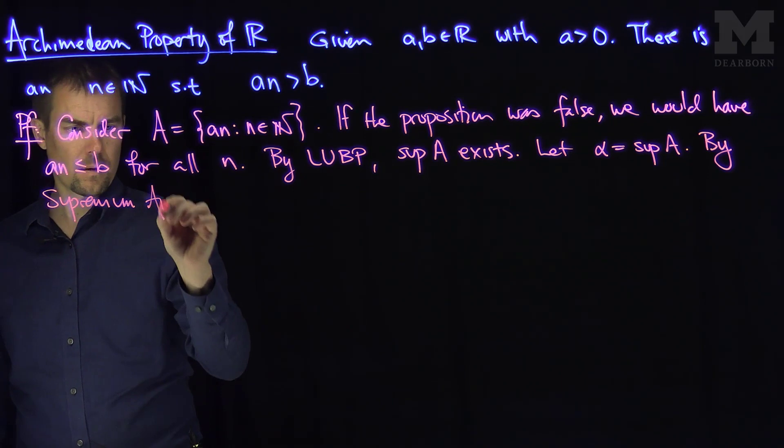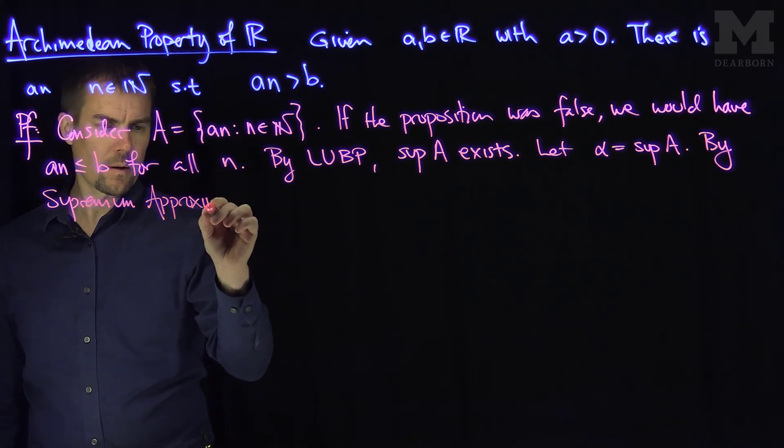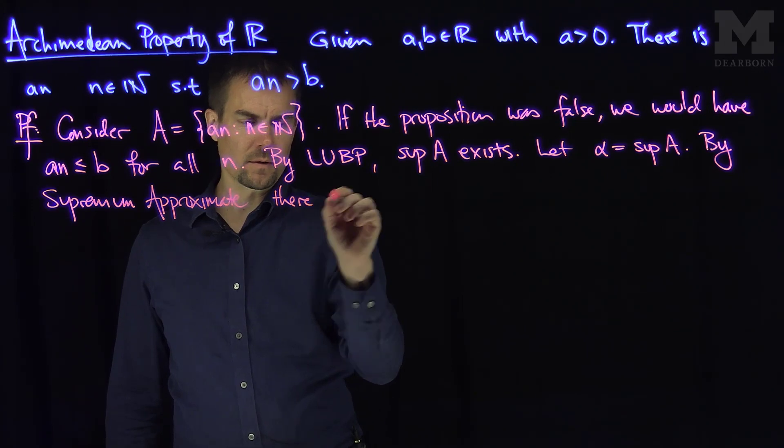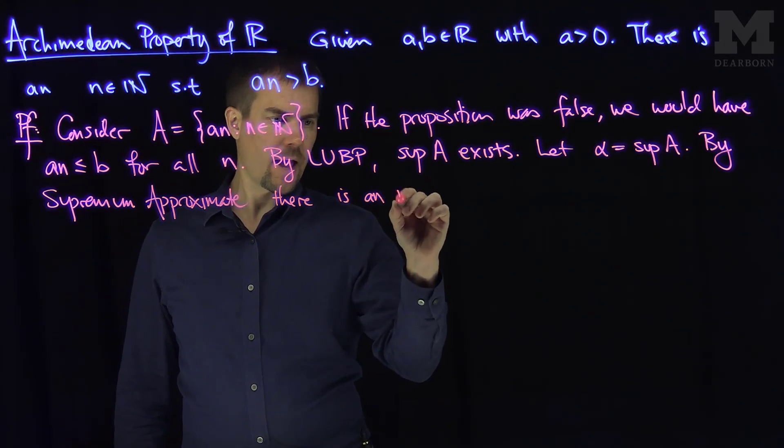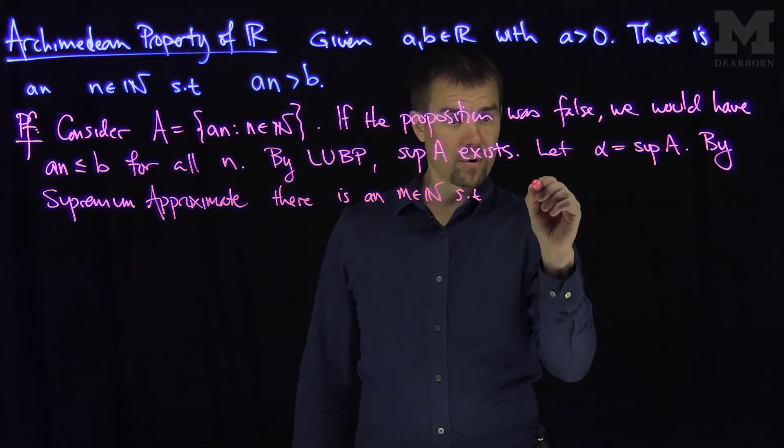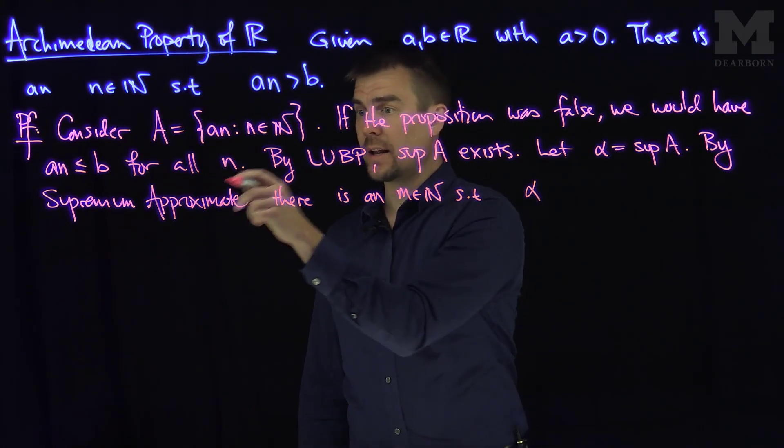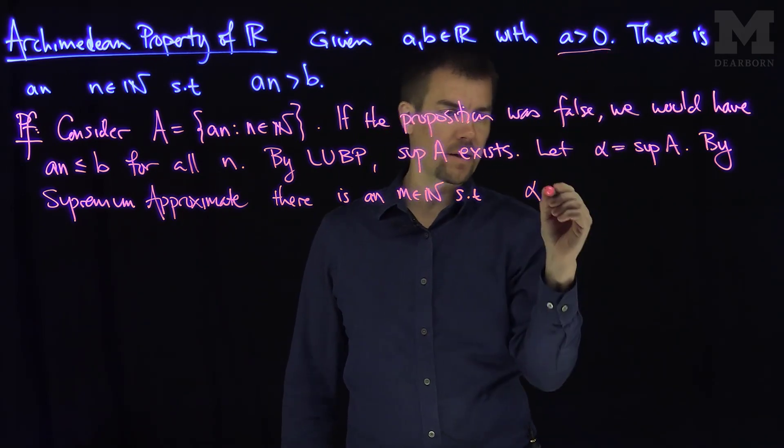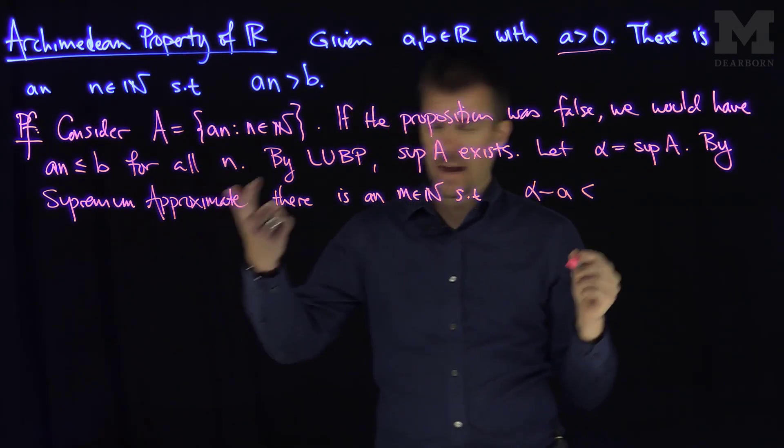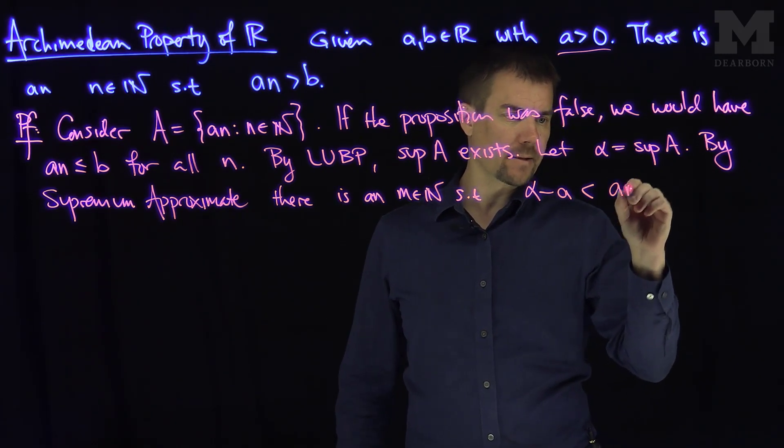there is m in N such that the supremum alpha minus a positive quantity, in this case a is our positive quantity, alpha minus a, is less than a times m.